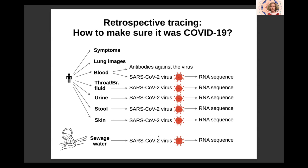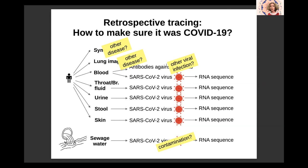You can also detect SARS-CoV-2 in sewage water, which is another method. The problem with these approaches is that some of them do not provide 100% proof that this was indeed COVID-19. Symptoms can be due to other diseases, as well as lung images. When antibodies are detected in the blood, they could be due to another viral infection, with antibodies which recognize other coronaviruses. So they are not definitive proof. And for sewage water, the RNA is in very little quantities, so it's not possible to fully exclude contamination.